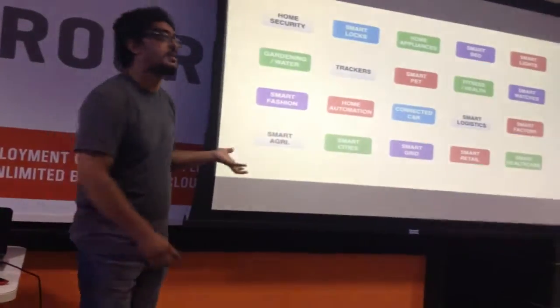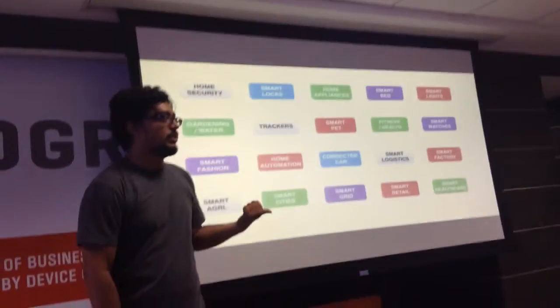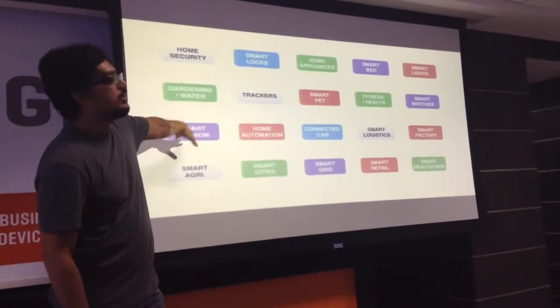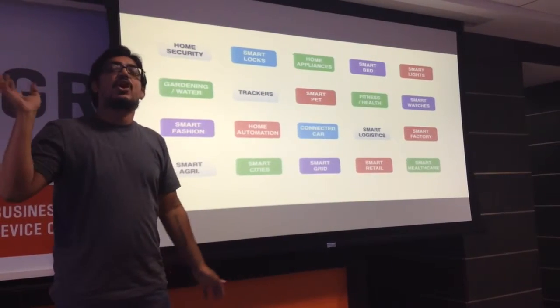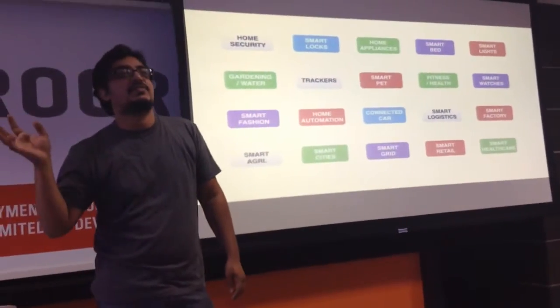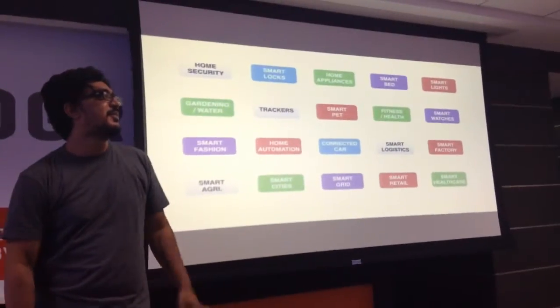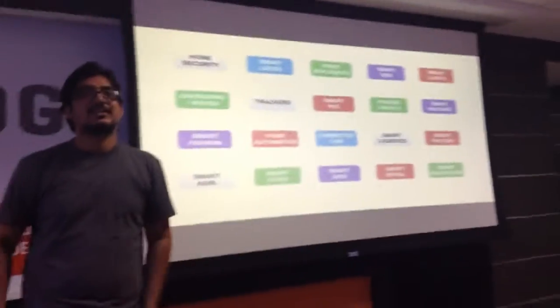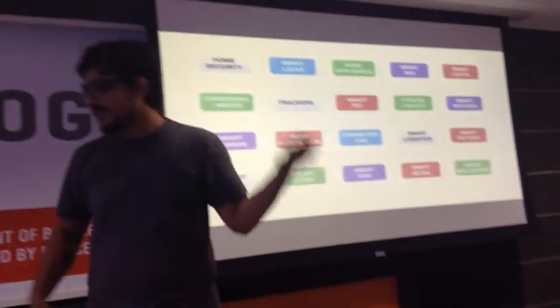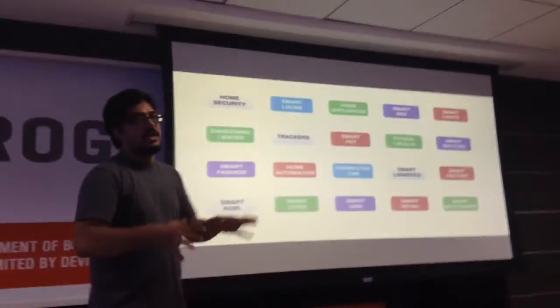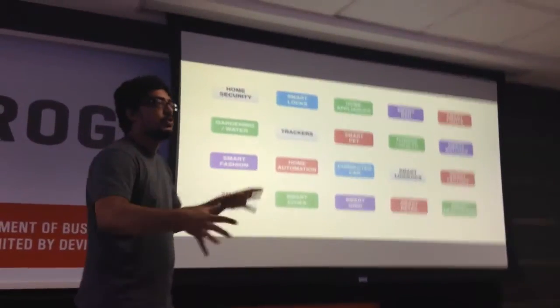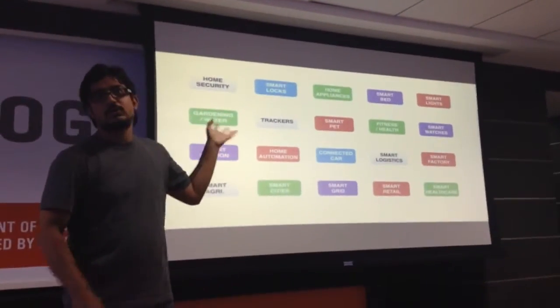There are so many other things you can do with Internet of Things — from agriculture, fashion, home automation, trackers, smart beds. How many of you know how to build a device that can feed your fish when you are away? With Internet of Things, you connect any device on the face of the earth to the internet and control it via the internet.